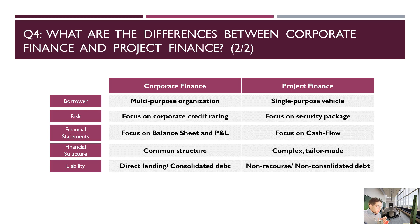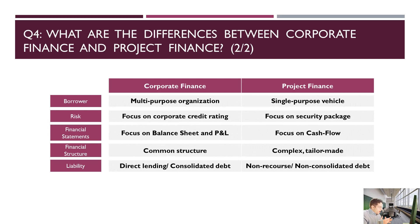The second key difference is risk. When a lender lends money to a corporation, they focus on its credit rating and credit history. When a lender lends to a special purpose company, they know the project finance structure is different. The only thing those lenders can do is ask for a security package — a defense mechanism and a way to put pressure on sponsors to ensure they have vested interest in the project.